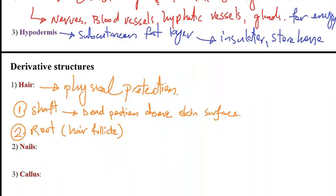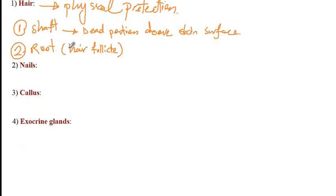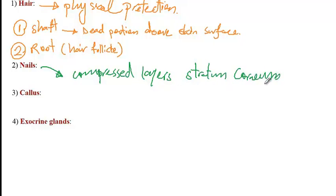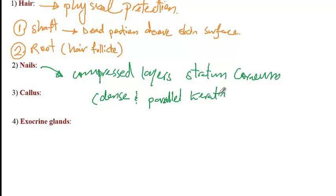The nail is formed from compressed layers of the outer epidermis — specifically the stratum corneum, which is the outermost layer. Due to the presence of dense and parallel keratin fibrils inside the nails, they have a hard structure.